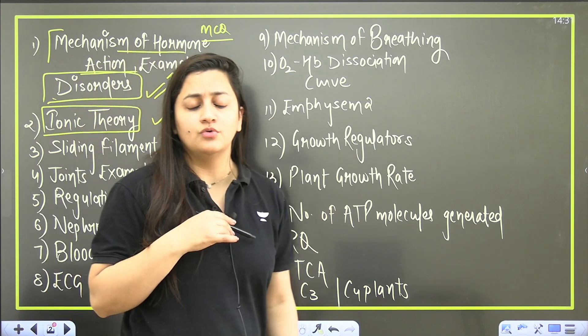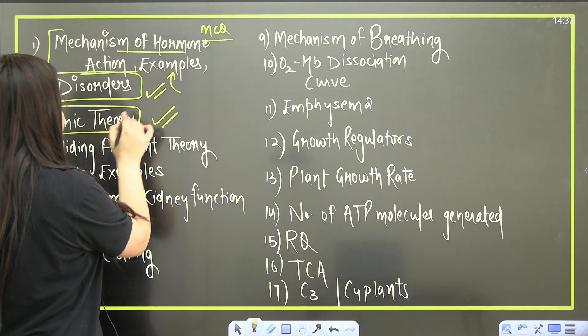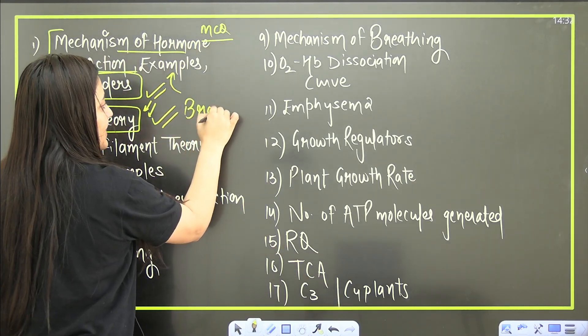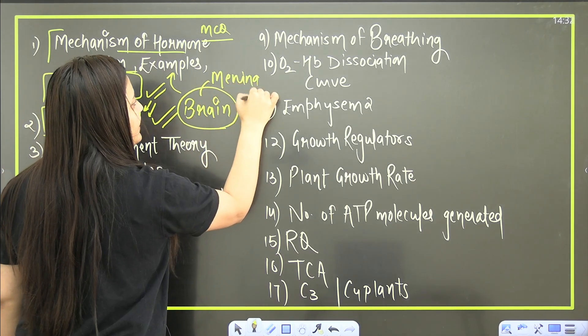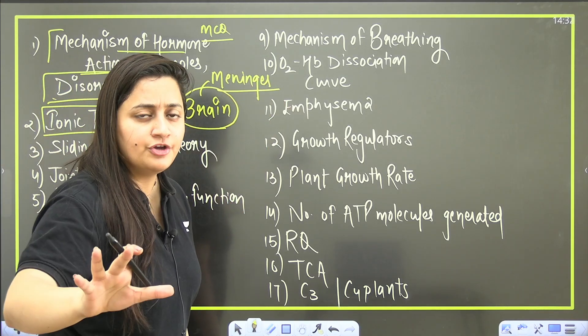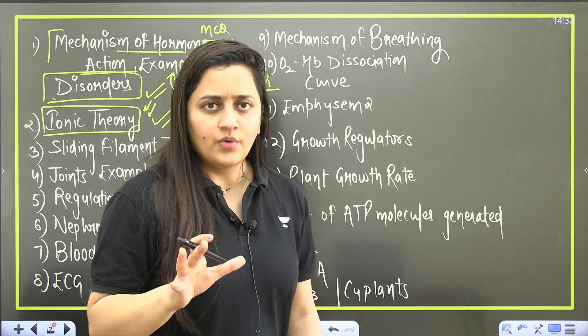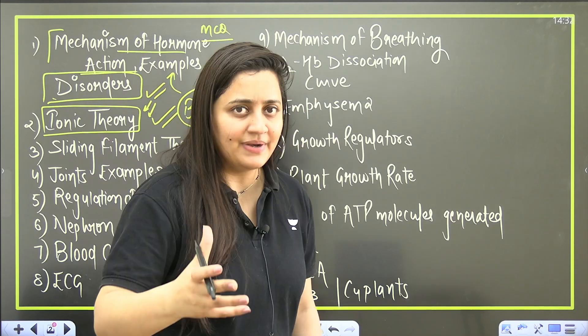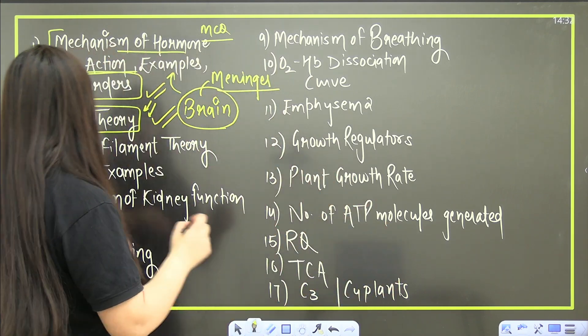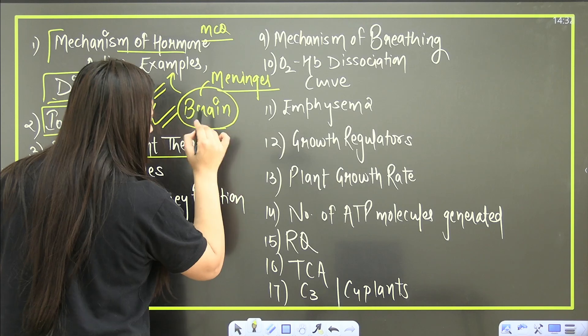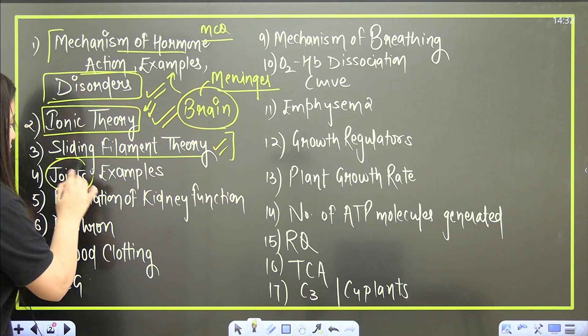Then ionic theory of nerve impulse conduction - because now there is no eye topic, there is no ear topic, so for sure you will get this particular part. If you ask about the brain, then I will suggest you one thing - please focus on the meninges only. That will be sufficient for you and you can solve PYQs on the basis of brain. Then the sliding filament theory - a very very important topic that you should never ever miss.